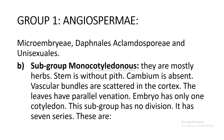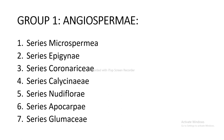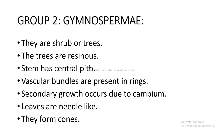The second subgroup is Monocotyledonae: mostly herbs, stem without pith, cambium absent, vascular bundles scattered in the cortex, leaves have parallel venation, and embryo has only one cotyledon. This subgroup has no divisions; it has seven series: Microspermi, Epigynae, Coronarieae, Calycinae, Nudiflorae, Apocarpi, and Glumaceae.